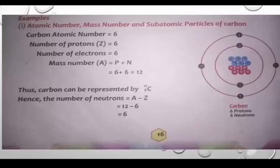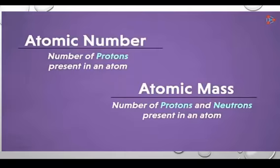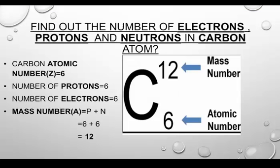These examples are present in your book on page numbers 16 and 17. After that, students, you have to test yourself by solving the simple questions given on page number 17. Before going towards the examples, we have to recall the definitions: atomic number is the number of protons present in an atom, represented by Z; atomic mass is the number of protons and neutrons present in an atom, represented by A.